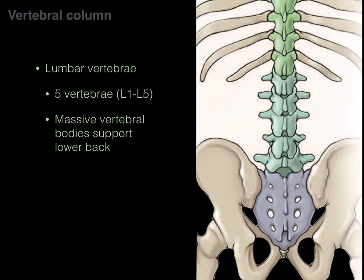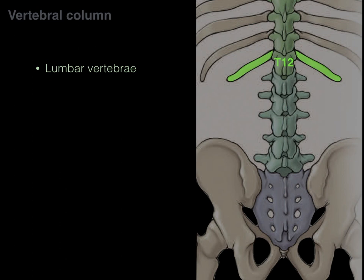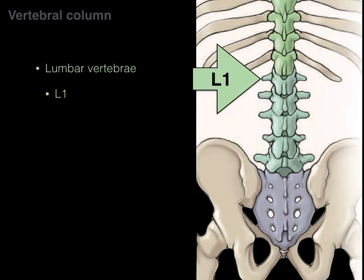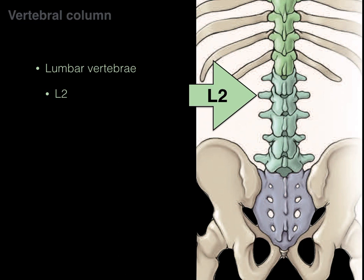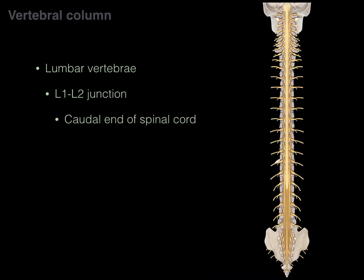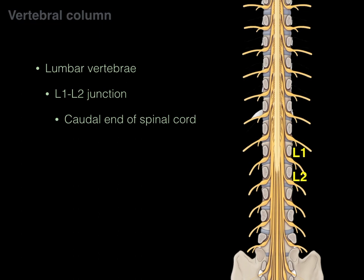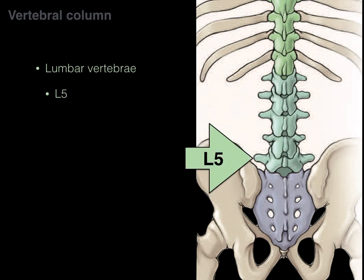The lumbar vertebrae — L1 to L5, five vertebrae — have massive vertebral bodies to support the lower back. You can identify them between T12, which has the last set of ribs, and the sacrum below. Importantly, between L1 and L2 is the caudal end of the spinal cord, then L3, L4, and L5 follow below.